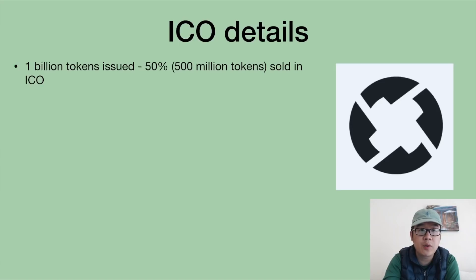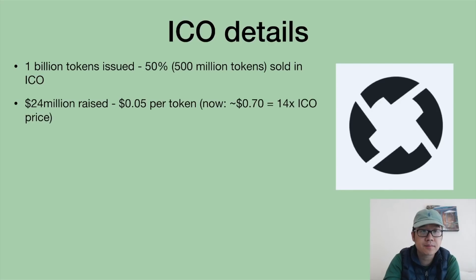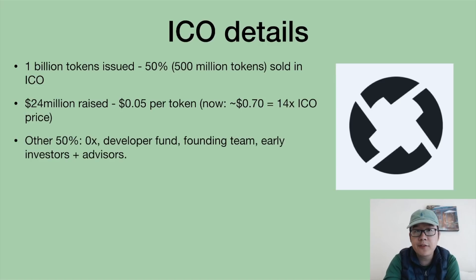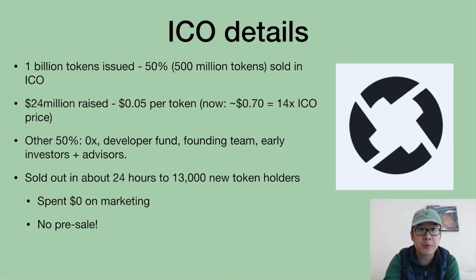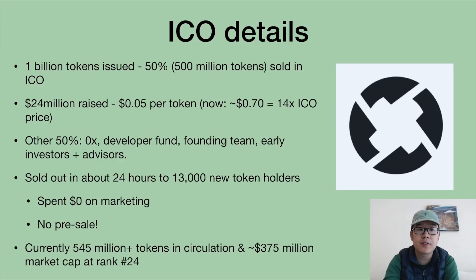What about their ICO? One billion tokens were issued and 50% were sold in the ICO, raising $24 million at $0.05 per token. Now it's roughly $0.70 — about 14x the ICO price. The other 50% went to the team, developer fund, early investors, advisors, and more. They sold out in about 24 hours to 13,000 unique token holders, spending $0 on marketing and with no private pre-sale. Currently roughly 545 million tokens are in circulation, with a market cap of around $375 million at rank 24 overall.